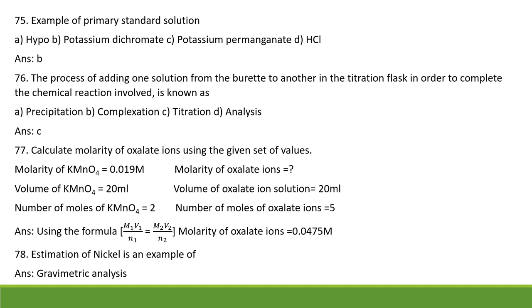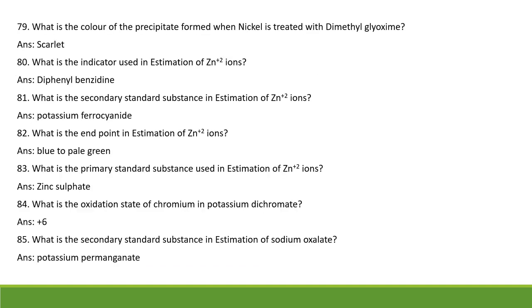Estimation of nickel comes under gravimetric analysis, where the amount of a constituent is determined by weighing the substance. What is the color of the precipitate formed when nickel reacts with dimethylglyoxime? It is scarlet. What is the indicator used in estimation of Zn²⁺ ions? Diphenyl benzidine. What is the secondary standard substance in estimation of Zn²⁺ ions? Potassium ferrocyanide, K4[Fe(CN)6]. What is the end point in estimation of Zn²⁺ ions? Blue to pale green.